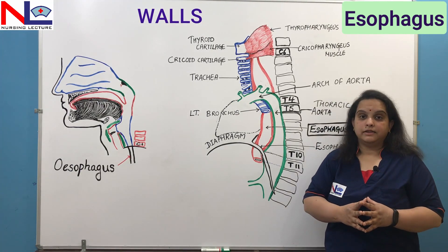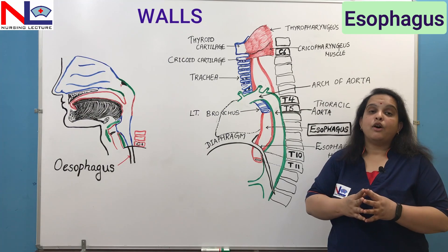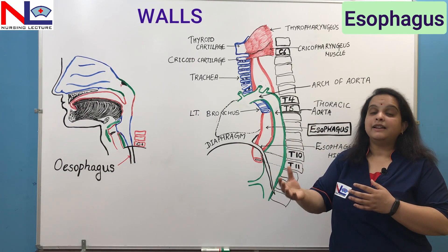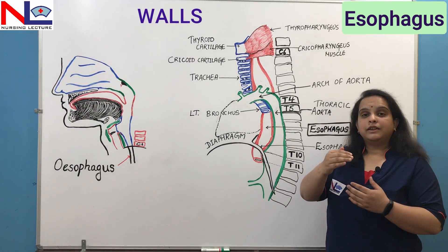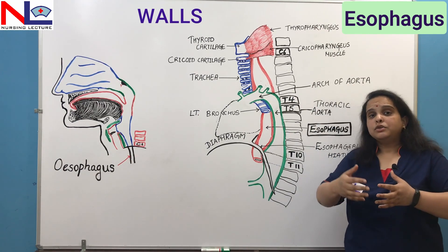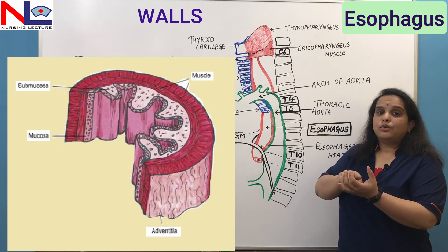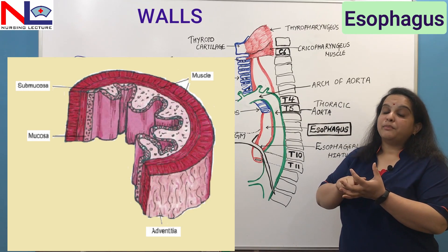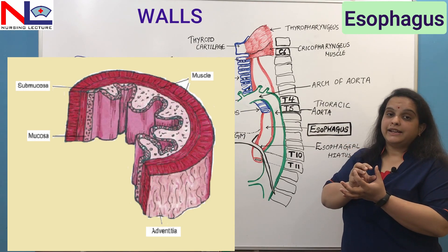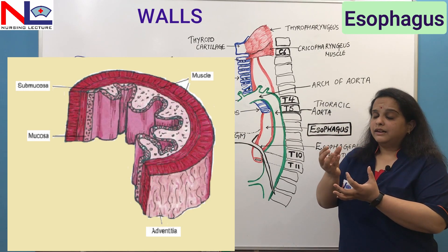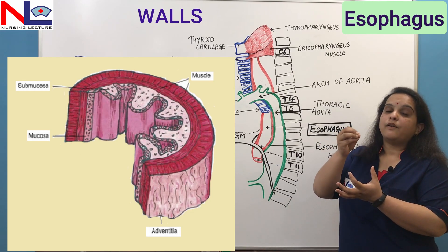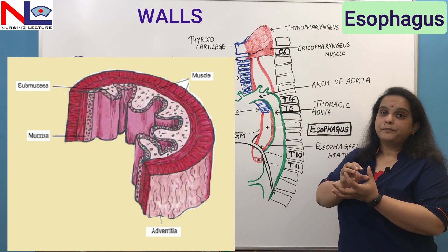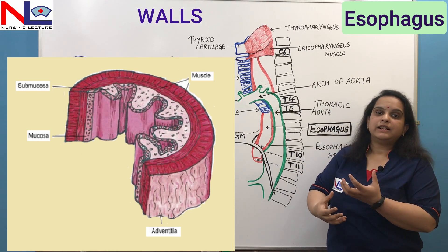Now let's see the wall of the esophagus. I've already made a video on the wall of the GI tract covering the four basic layers, so I won't go into great detail here. The innermost layer lining the lumen is the mucosa, which is made up of non-keratinized stratified squamous epithelium because it can be damaged by food particles — it consists of multiple layers of flat squamous cells.